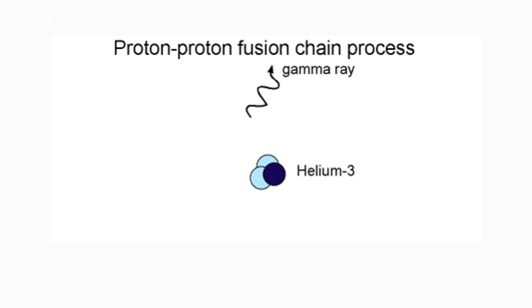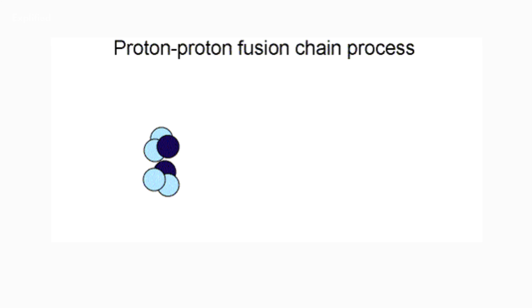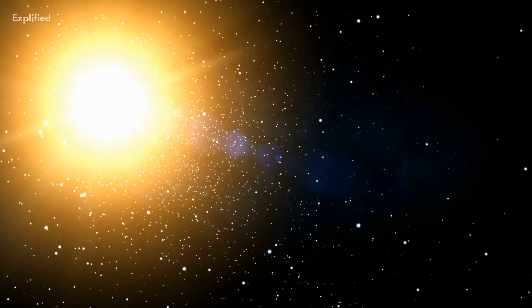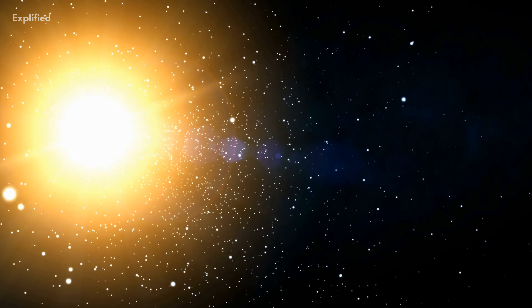Finally, two of the helium-3 nuclei will collide to form another isotope known as helium-4, and two hydrogen protons are then released. The helium-4 atom has less mass than the original four protons that first came together in the first step.